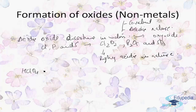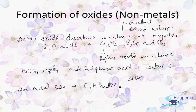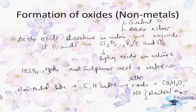For example, HClO₄, H₃PO₄, and sulfuric acid form when these oxides dissolve in water, producing salts when they react with alkalis. Some non-metals like carbon, hydrogen, and nitrogen form oxides such as CO, H₂O, and NO (nitrogen oxide), which we call neutral oxides.